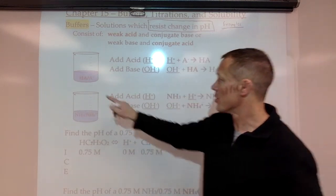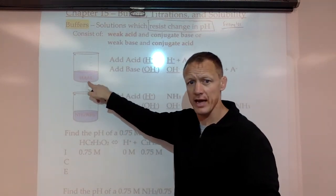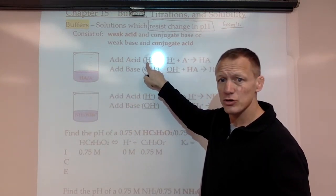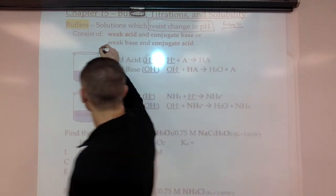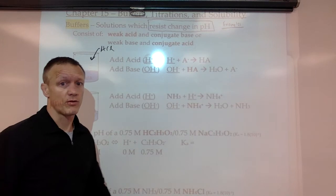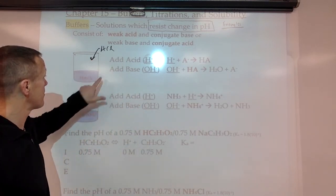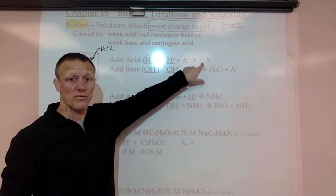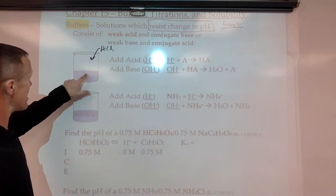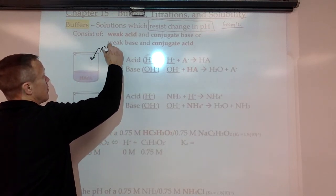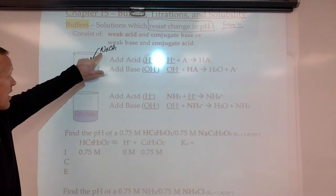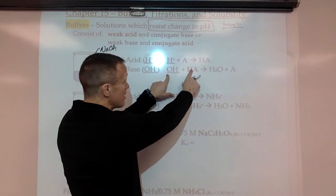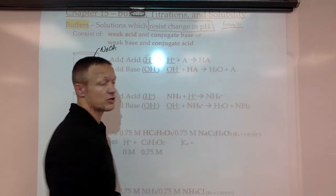Here's the generic setup: HA is the weak acid, A- is the conjugate base. If we add some H+ ions to this buffer — say we add HCl, which provides H+ ions because it's a strong acid — those H+ ions will react with A- and make more of the conjugate acid. If we add a base, say sodium hydroxide, the OH- ions will react with HA, the weak acid, to make water and the conjugate base.